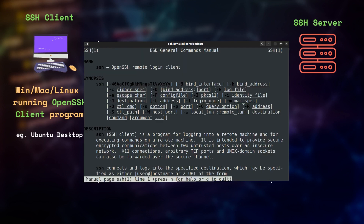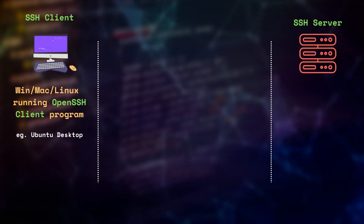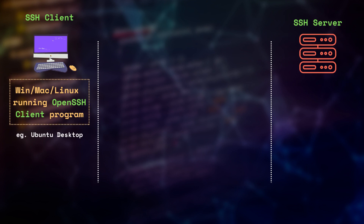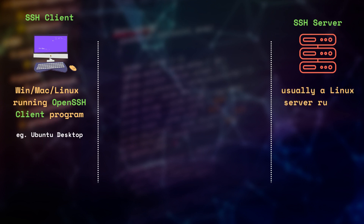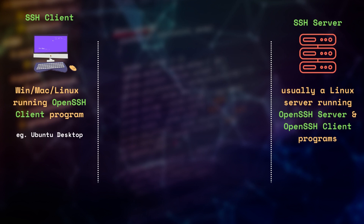To get the detailed usage information, use the man command, which opens the SSH manual. The SSH command utility allows you to initiate connections to a remote SSH server. In contrast to a client machine, an SSH server has both the client and the server program running on it, so it can receive incoming connections as well as initiate connections to other SSH servers.